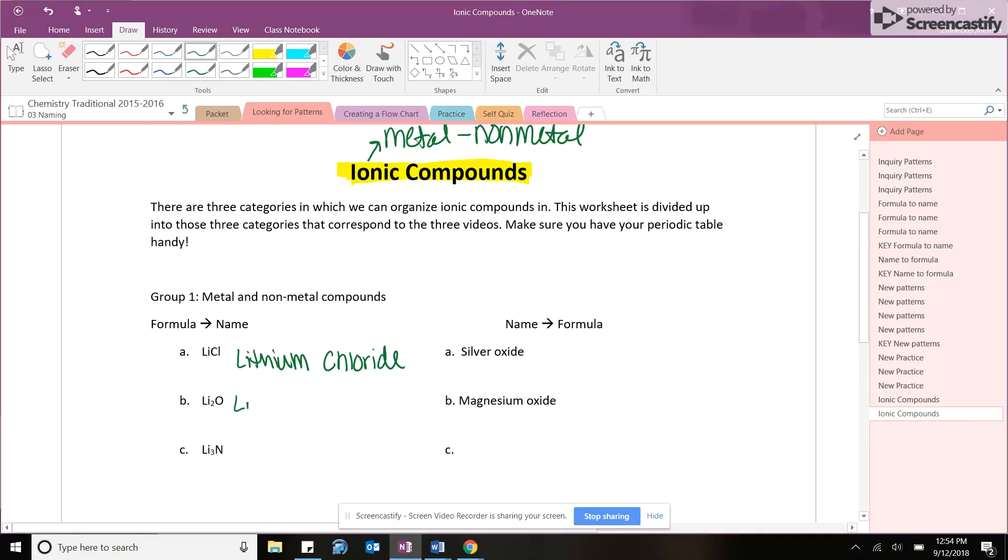So you go on to the next one, Li2O. And because it's a metal and a non-metal, we don't need to use those prefixes. So again, we're going to follow the rule. We're going to look up Li. We just did that. We did. So we're just going to copy and paste. It is lithium still, but O is oxygen. So what would our ending be for oxygen then?